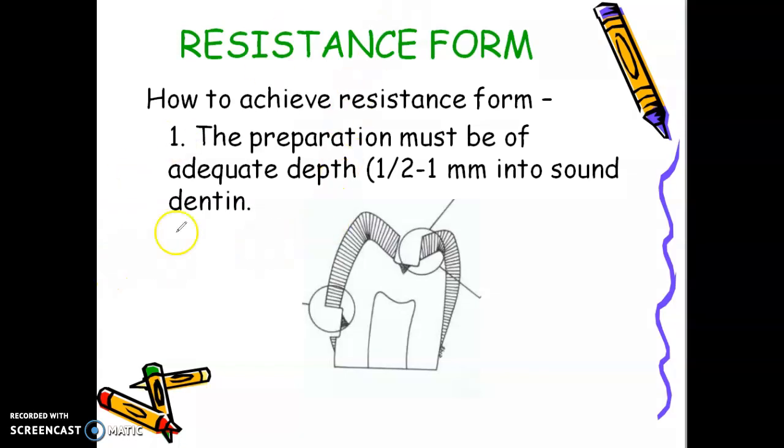When you say 0.5 to 1 mm into sound dentin, that means from the DEJ area, your pulpal floor should be 0.5 mm into the dentin. So in this case, even if your caries is just in the enamel area, you will still have to do your preparation into the dentin. Again, you will still have to do your preparation 0.5 to 1 mm into the sound dentin.